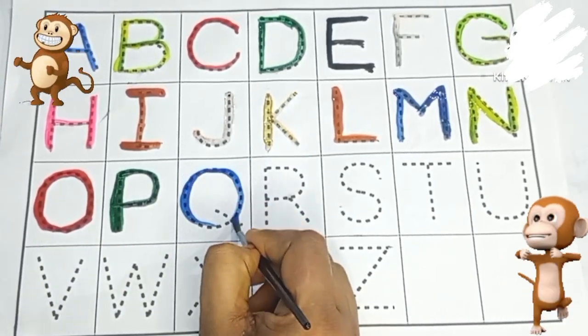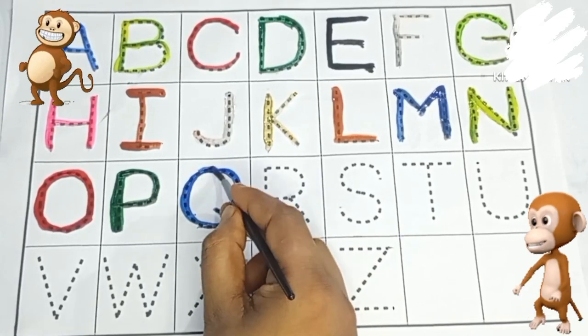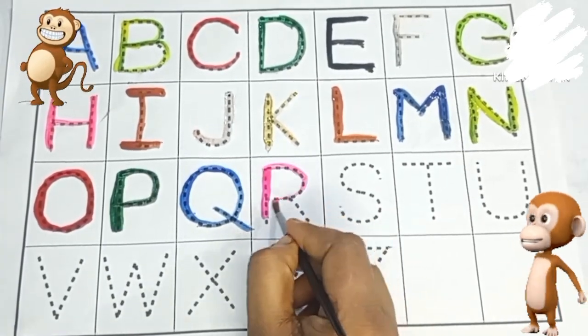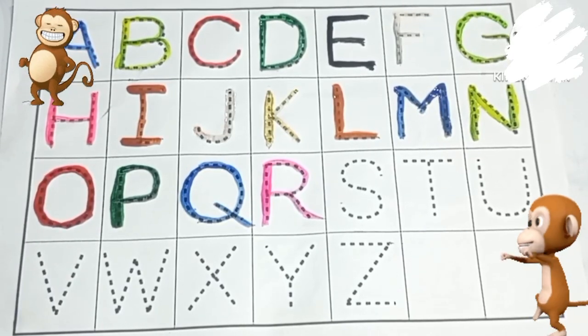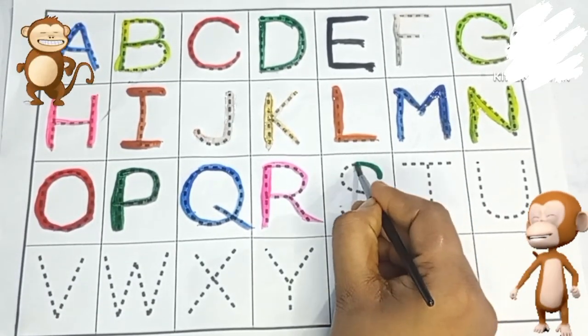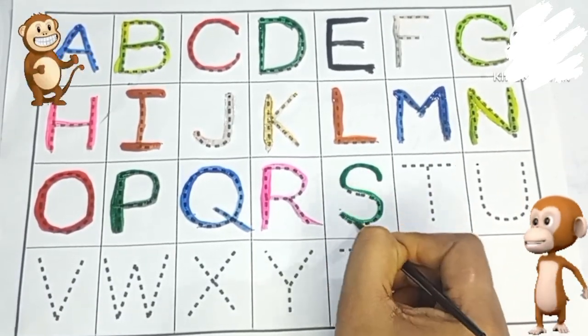Now I know Q. Q for a queen. Next time won't you sing. R. R for rose. S for ship.